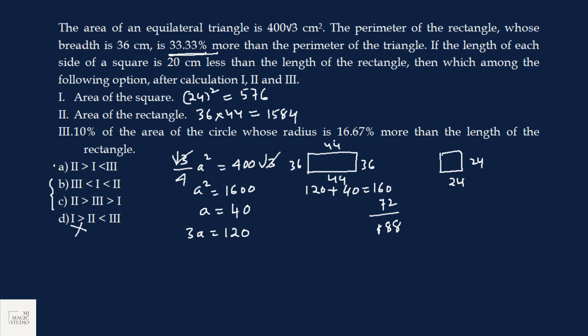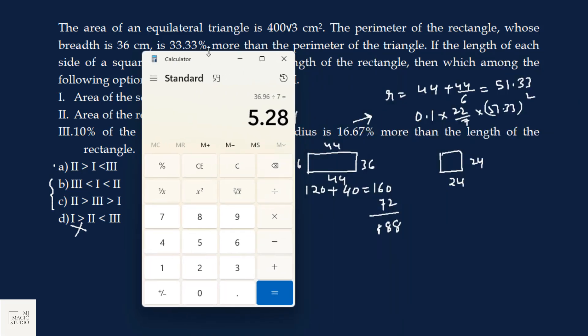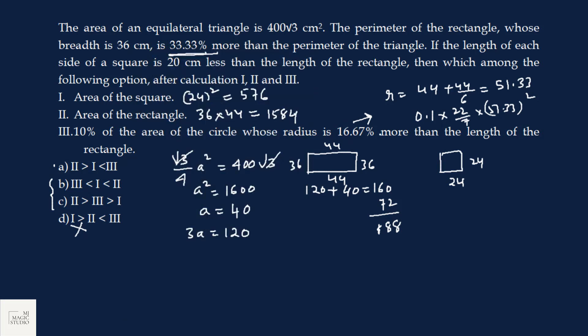10 percent of the area of the circle whose radius is 16.67 percent, that is 1 sixth more than the length of rectangle. Length of rectangle is 44. So, here our radius is 44 plus 44 by 6. So, radius will come around 51.33. 10 percent of the area will be 0.1 into pi into 51.33 whole square. Let us find the value of part 3. 0.1 into 22 by 7 into 51.33 into 51.33. So, it is coming at 828. The value of part 3 is 828. So, 2 is greater than 3. 1584 is greater than 3. Correct? And 3 is greater than 1. Option C is the fit.